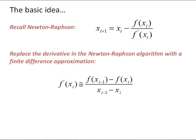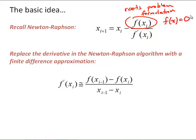Here's the basic idea. Recall Newton-Raphson, here's our iteration scheme, where x sub i+1 equals x sub i minus f of x sub i divided by the derivative f prime of x sub i. And again, f of x sub i, important to note, that's our roots problem formulation. That's it, f of x equals 0. And remember, we're trying to find that value of x. That's our goal. Again, just reviewing a little bit about what is a roots problem.